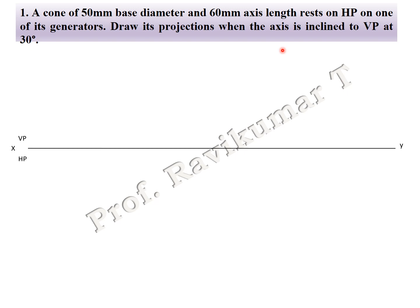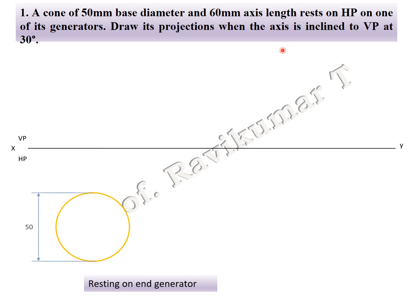For the cone, if you're looking from the top of the object, it looks like a circle. The circle is divided into eight parts, labeled a, b, c, d, e, f, g, h, then O, O1, and O2.